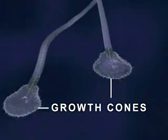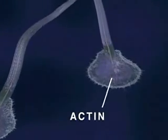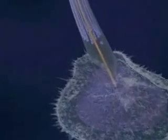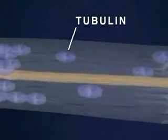Two principal proteins involved in growth cone function are actin, which is responsible for the pulsating motion seen here, and tubulin, a major structural component of the neurite membrane.